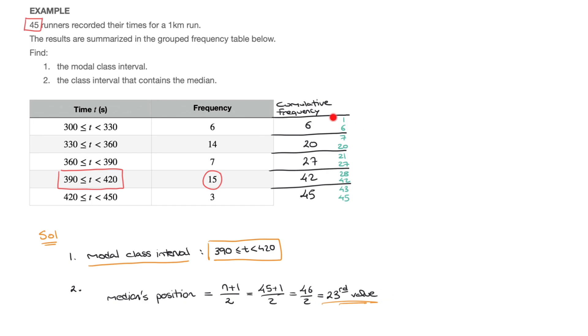And so looking at the numbers on the side again, we quickly notice that from the 21st to the 27th value, the times taken were between 360 and 390 seconds. And since 23 is between 21 and 27, it's quite clear that the 23rd value, and therefore the median, lies in this interval. And so the class interval 360 to 390 can be called the median class interval. And I'll go ahead and state the final answer over here.